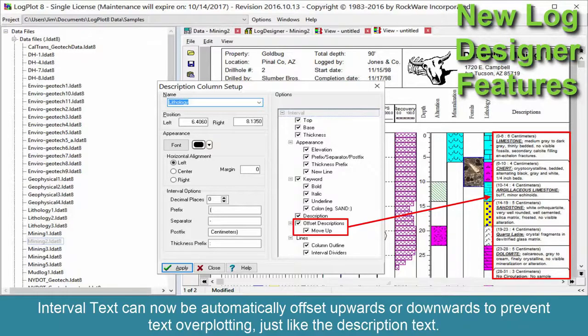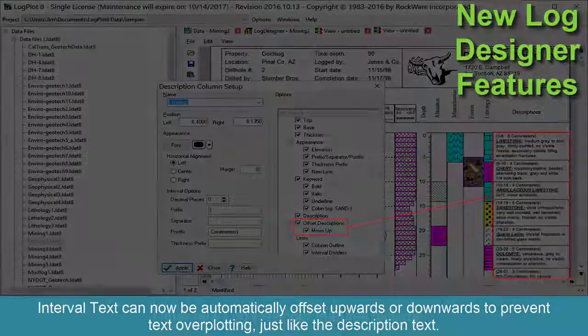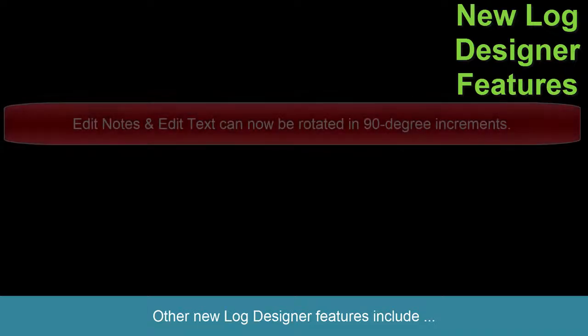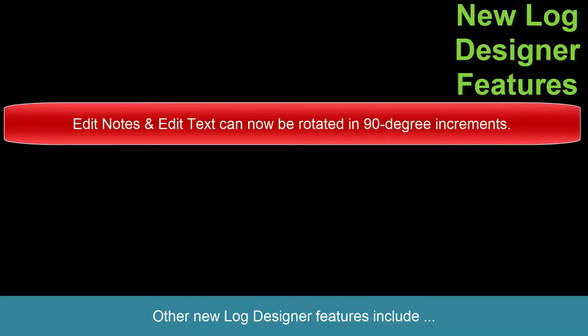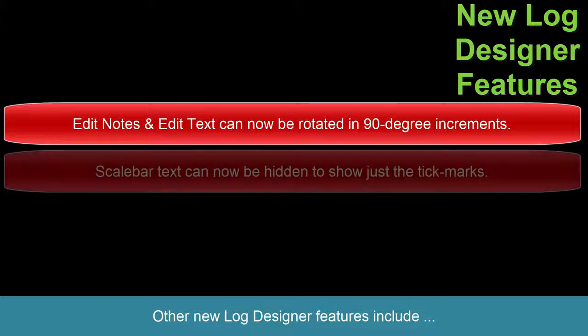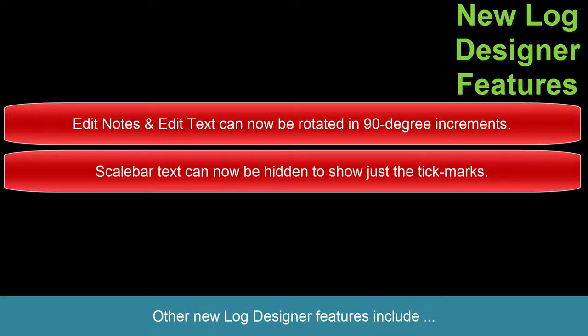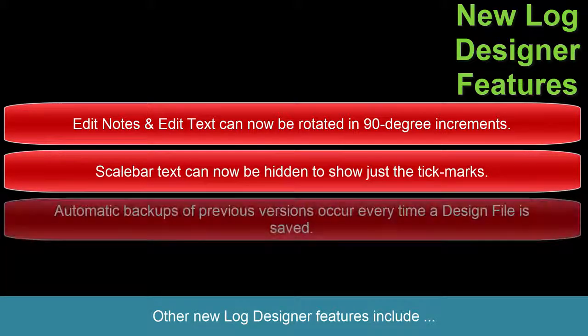Interval text can now be automatically offset upwards or downwards to prevent text overplotting, just like the description text. Other new log designer features include edit notes and edit text, which can now be rotated in 90-degree increments.